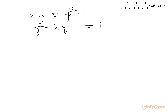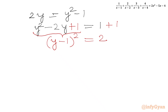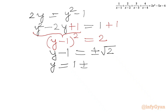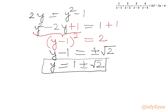Now I will use the completing the square method. Adding 1 to both sides, the LHS gives the perfect square y minus 1, and the RHS is 2. Taking square root of both sides with the plus-minus sign gives y minus 1 equal to plus or minus square root of 2. Adding 1 to both sides gives y equal to 1 plus or minus square root of 2. And y was our substitution for x squared minus 5x plus 5.